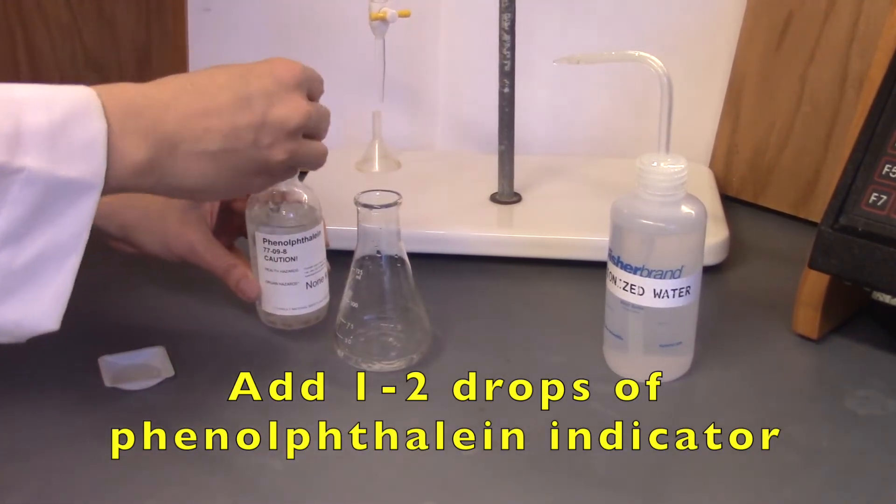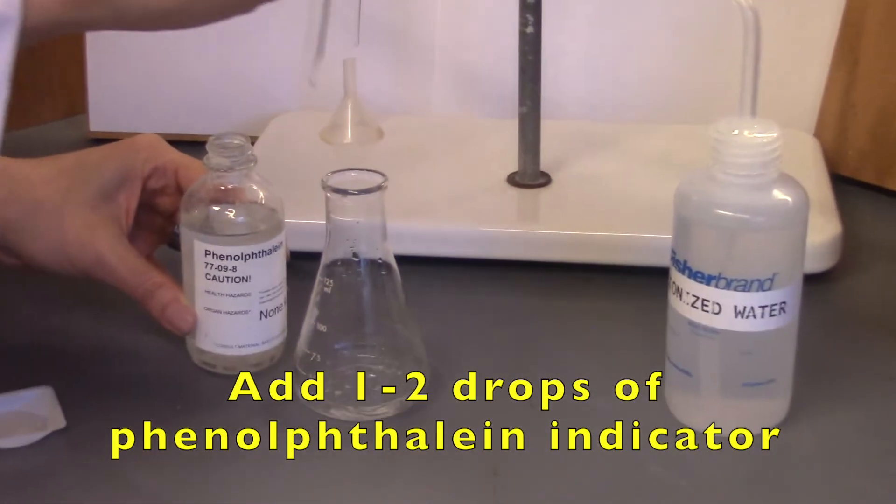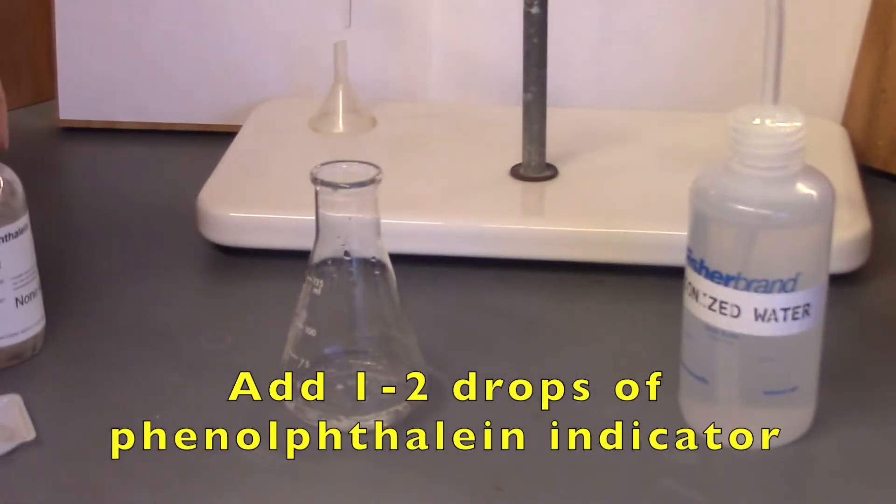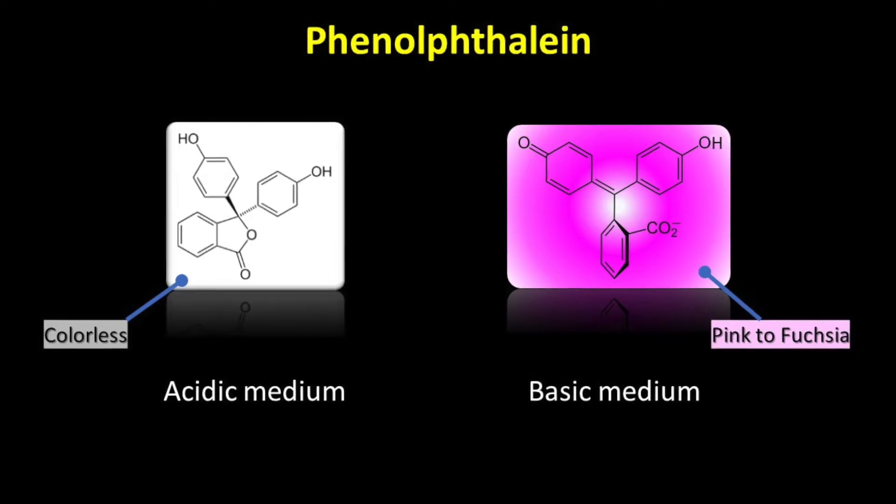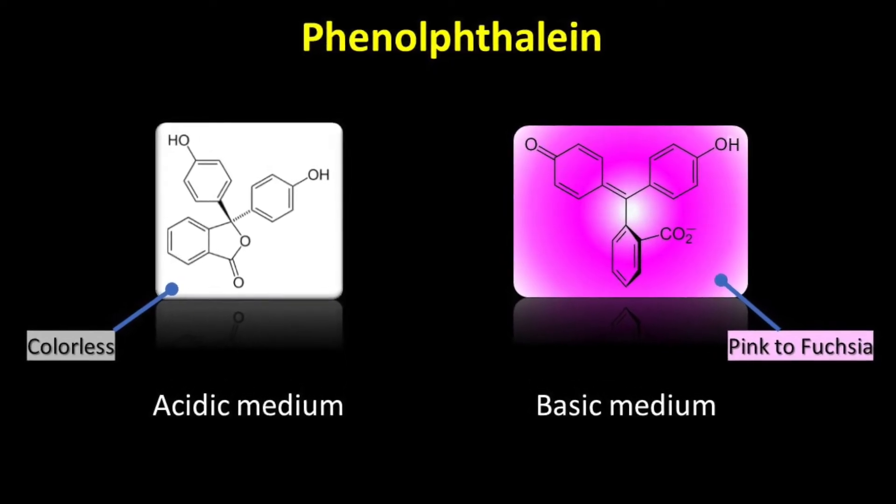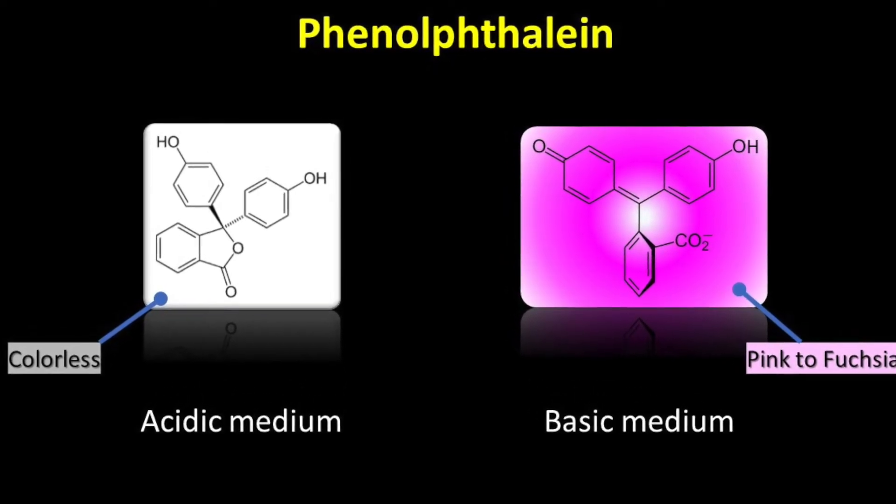Add 1-2 drops of phenolphthalein. Phenolphthalein is an indicator that is colorless in acidic medium. Under basic conditions, the indicator becomes pink due to a change in structure that results in an extended conjugation.